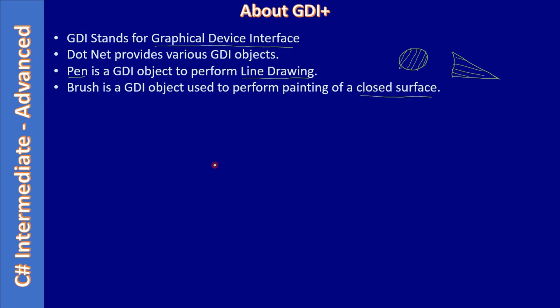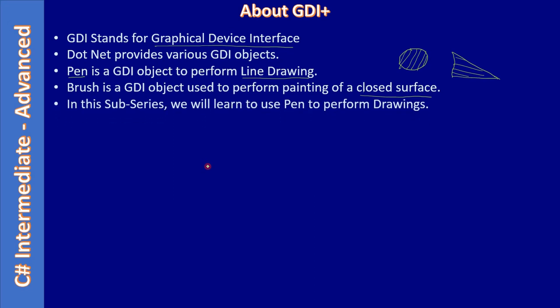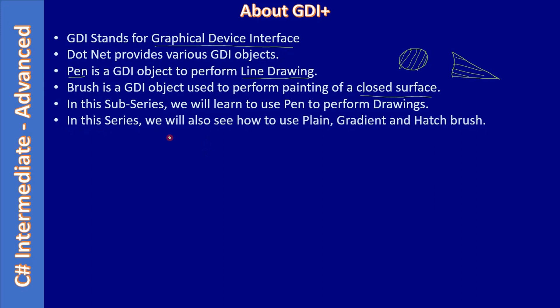We can call this a closed surface or a shape. In this sub-series we will learn to use the pen to perform drawing, then we will also see how to use brushes. Brushes fall into three categories: line, gradient, and hatch — or what some people call a pattern brush.